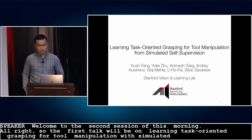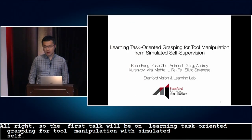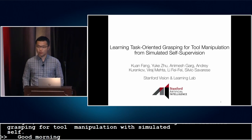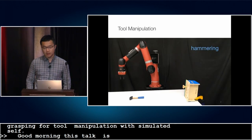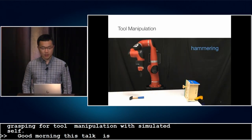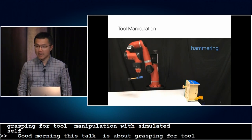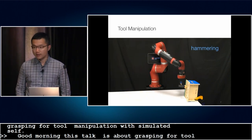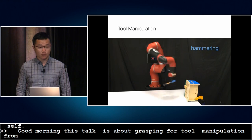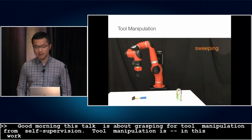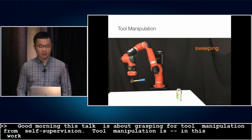Good morning. I'm Kuan from Stanford. This talk is about learning task-oriented grasping for tool manipulation from simulated self-supervision. Tool manipulation is a vital skill for achieving generalizable robot autonomy. In this work, we aim to control a seven-DoF robot arm to grasp unseen objects as tools and execute the desired tasks.